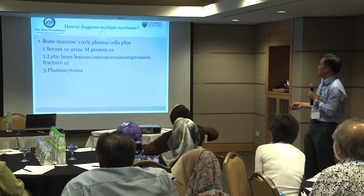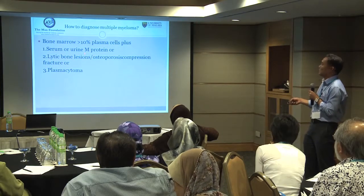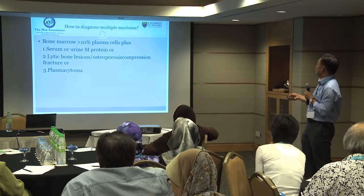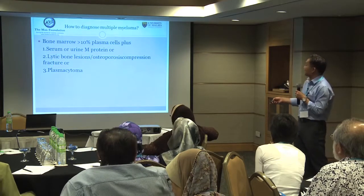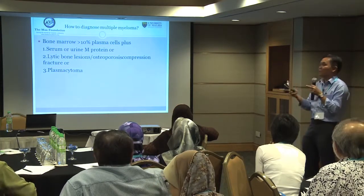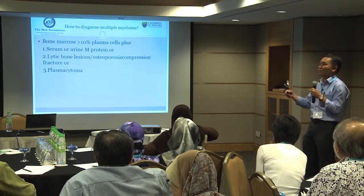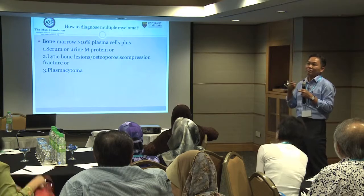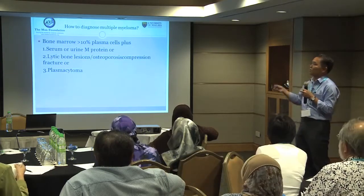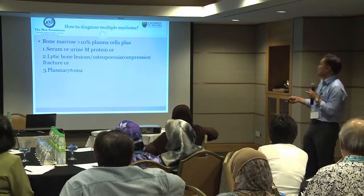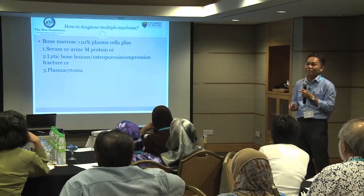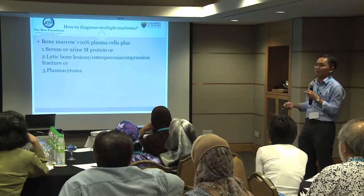As I said, multiple myeloma must have organ damage. Bone is one of the organs that can have problems. On imaging we can see lytic lesions, osteoporosis, or fractures. Some patients' abnormal plasma cells accumulate and become like a solid organ tumour — we call it plasmacytoma. Plasmacytoma can happen in soft tissue or in the bone, and some people come in with a lump. We need to take tissue from the tumour to send to a lab to confirm it's plasma cells.